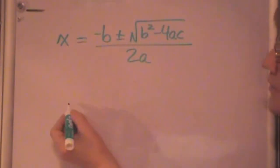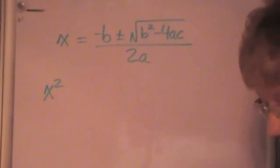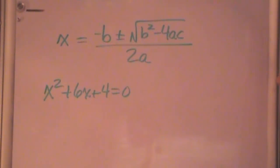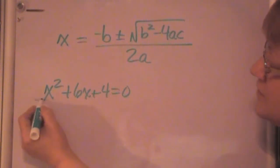So if you have something—let's say we have x² plus 6x plus 4 equals 0. We can solve this and determine what x is by just plugging our a's, b's, and c's into this quadratic formula. You should memorize this formula, because you'll need it.